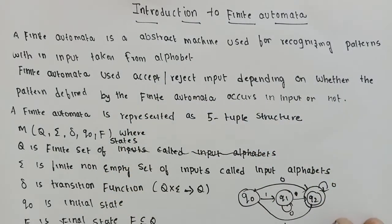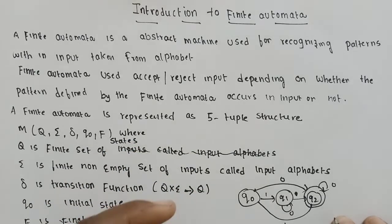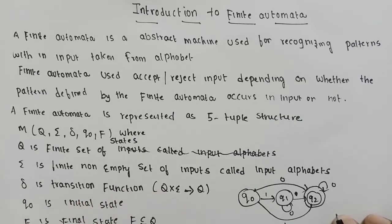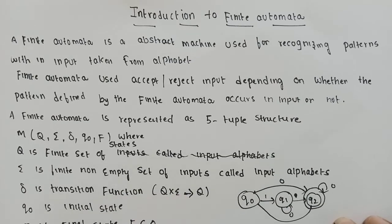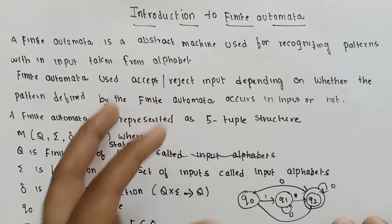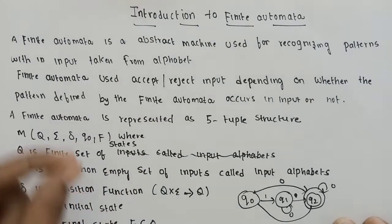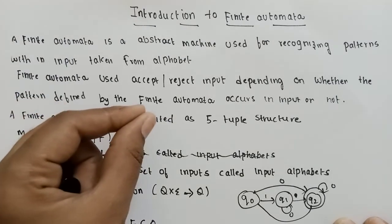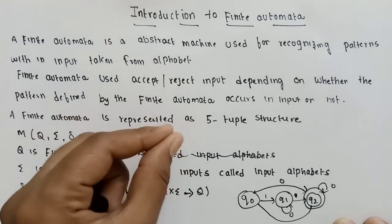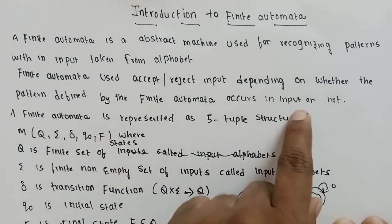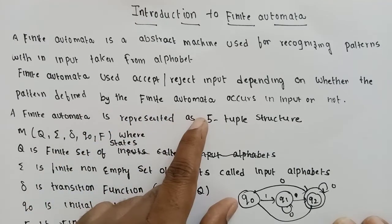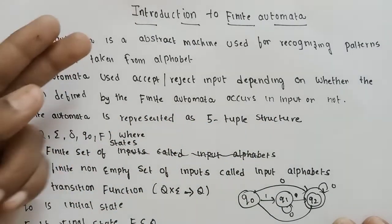Finite Automata can be thought of as a computer used for recognizing particular patterns in a given input. It will accept or reject input depending upon whether the pattern defined by the Finite Automata occurs in the input or not.